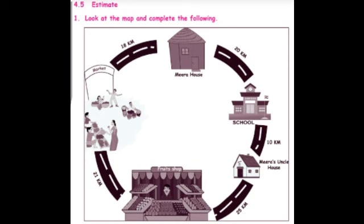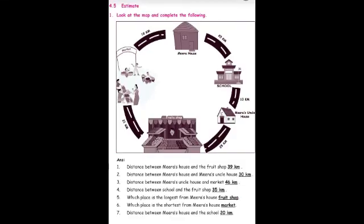The map shows Mira's house, school, Mira's uncle's house, fruit shop, and market. Near each location, distances are given: Mira's house to school is 20 kilometers, school to uncle's house is 10 kilometers, and so on. The first question is: what is the distance between Mira's house and the fruit shop? Looking at the map, there are two ways to get there — one way is through school and uncle's house.